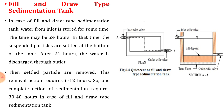The time may be 24 hours. In that time, the suspended particles are settled at the bottom of the tank. After 24 hours, the water is discharged through the outlet. Usually, as shown in the figure, the inlet is provided at the top of the tank whereas the outlet is provided at the bottom after providing sufficient depth for the deposition of silt or suspended particles. Then settled particles are removed. This removal action requires 6 to 12 hours. So one complete action of sedimentation requires 30 to 40 hours in case of fill and draw type.